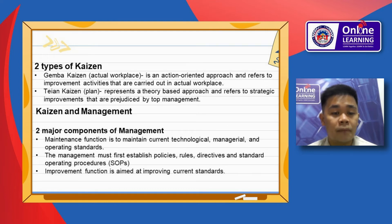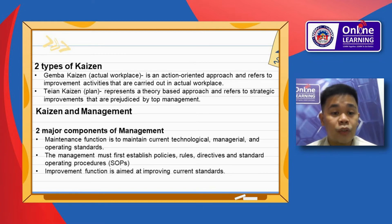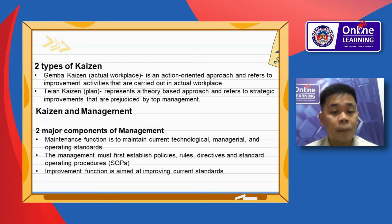There are two types of Kaizen. First, Gemba Kaizen, the actual workplace. It is an action-oriented approach and refers to the improvement activities that are carried out in the actual workplace. Second, Teian Kaizen, the plan, represents a theory-based approach and refers to strategic improvements that are directed by top management.